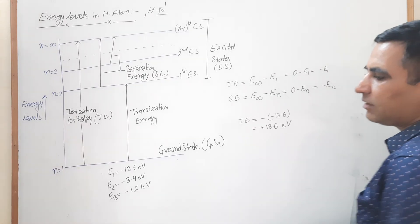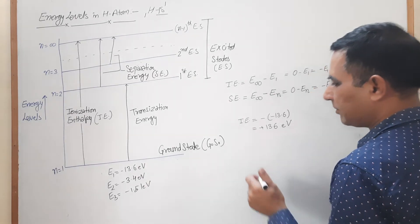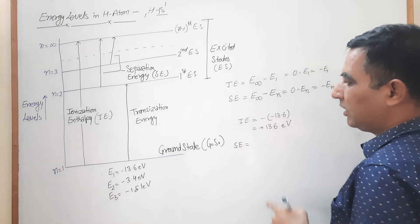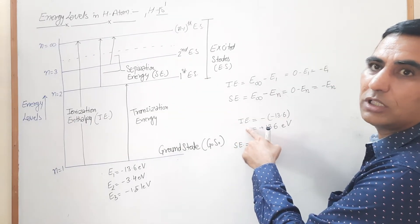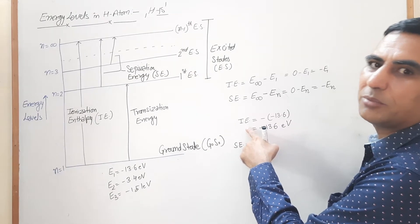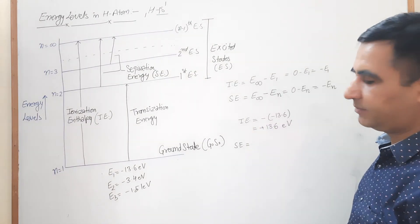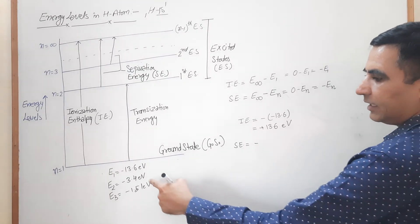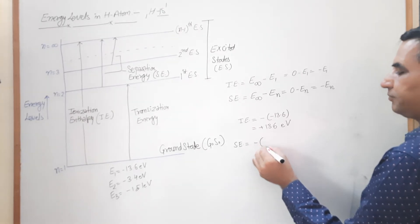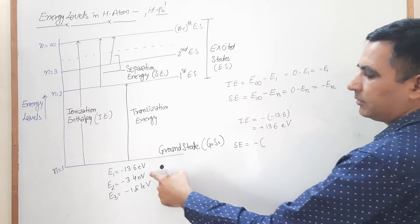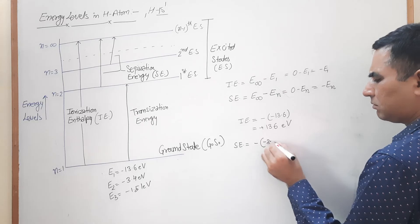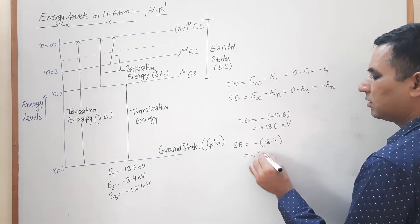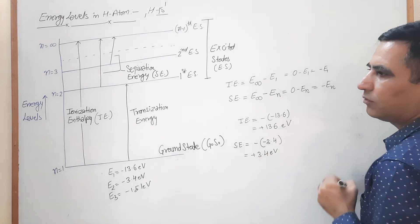If we try to separate the electron from the second energy level, we use the term separation energy rather than ionization enthalpy. Ionization enthalpy is used only when separating from the ground state. Separation energy from the second energy level equals minus E-n, where E-n equals minus 3.4 eV, giving a separation energy of plus 3.4 eV.